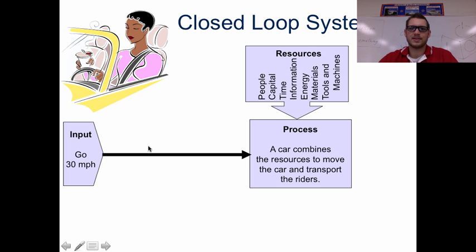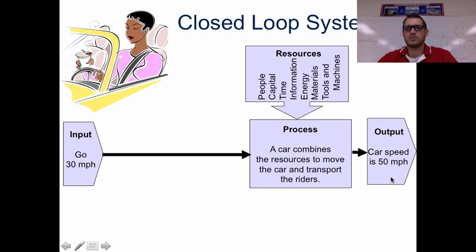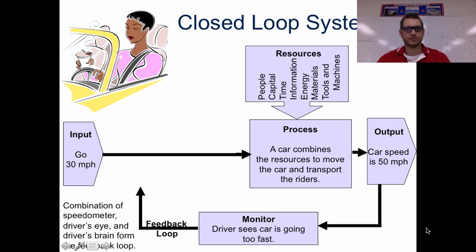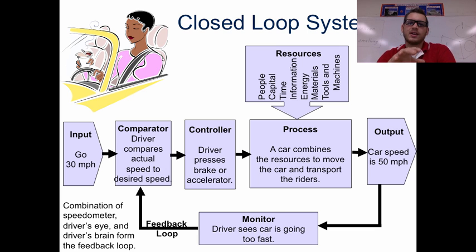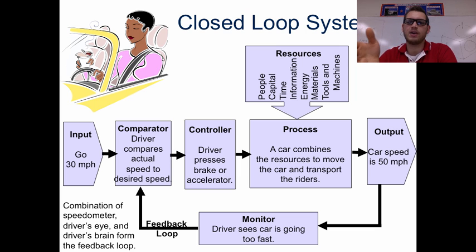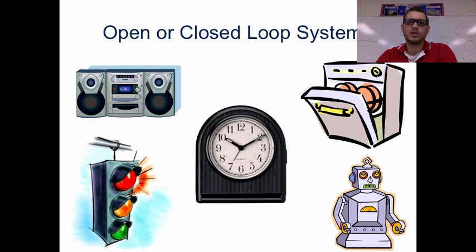So let's talk about a closed loop system. Input: going 30 miles an hour. A car combines resources to move the car and transport the riders. Output: the car speed is 50 miles per hour. The driver sees the car is going too fast — the combination of the speedometer, the driver's eyes, and the driver's brain form a feedback loop. You're supposed to be going 30 miles an hour but the output is 50, so you monitor that, see that the car is going too fast, and slow down. The driver compares actual speed to desired speed, then presses the brake or accelerator. If you need to speed up, you speed up, then check the output again — and you keep monitoring and adjusting.